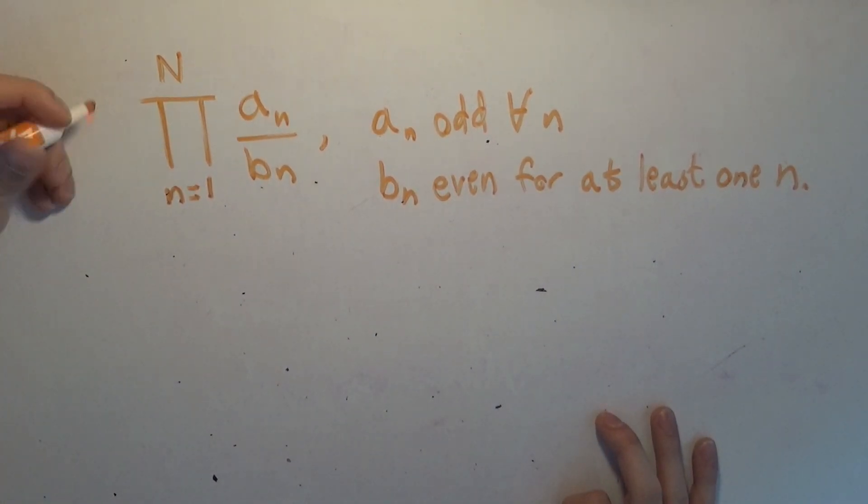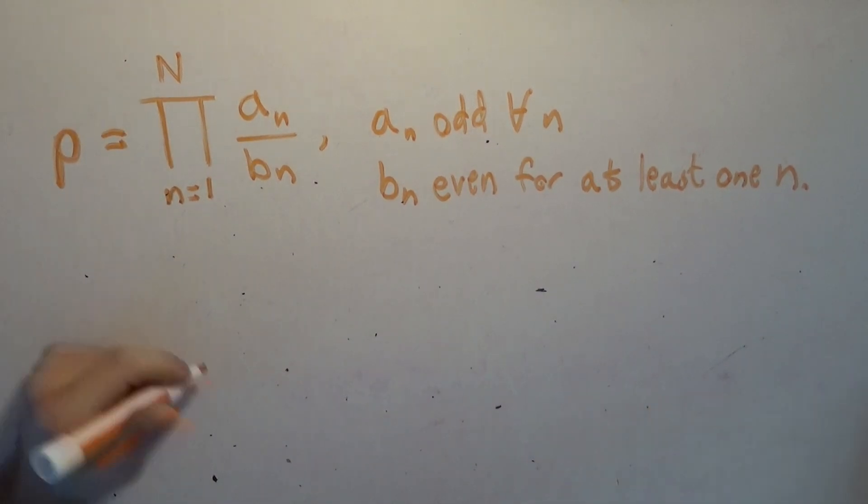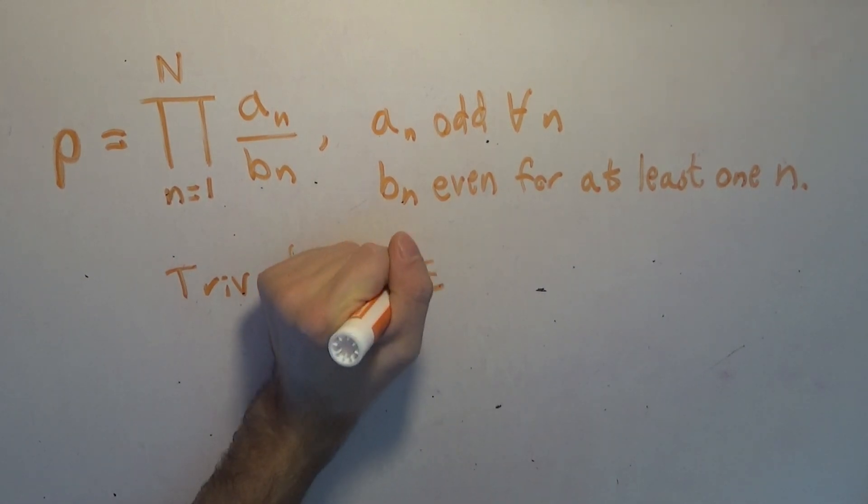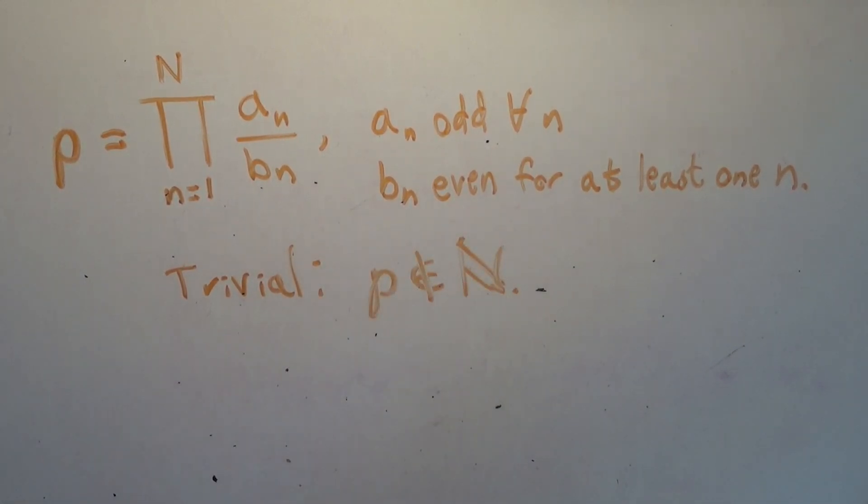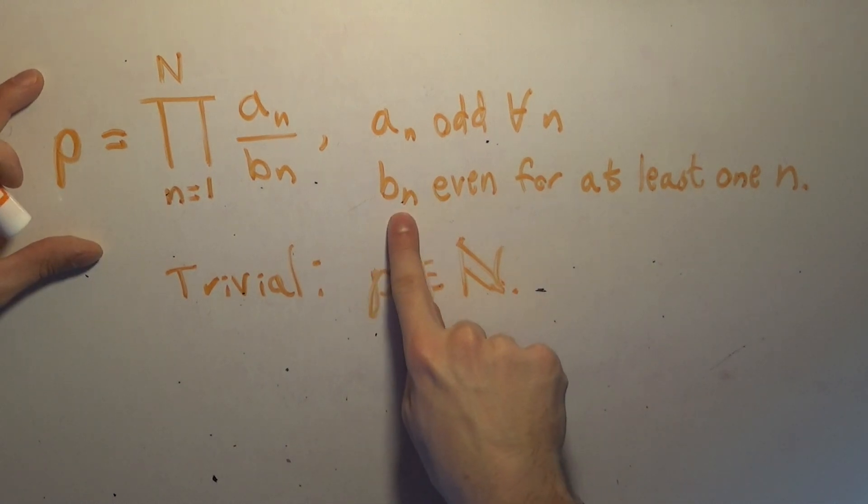So every single A_n is an odd number and every single B_n could be odd except for one, because any even factor will make the product in the denominator even. The point is that this finite product will never, we'll call this little p for finite product. So it's quite clear, trivial, little p is not a member of the integers or the natural numbers.